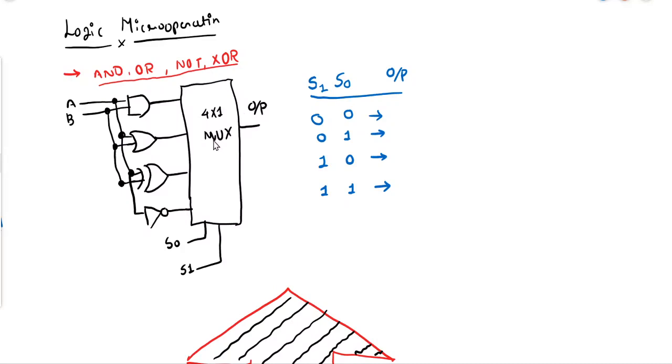As you can see in the circuit, this is a four by one multiplexer. This is the output and these four are the inputs: input number zero, input number one, input number two, and input number three. The first input is AND gate, next is OR, next is XOR, and this is NOT. Let me write down the names: AND, OR, XOR, and NOT.